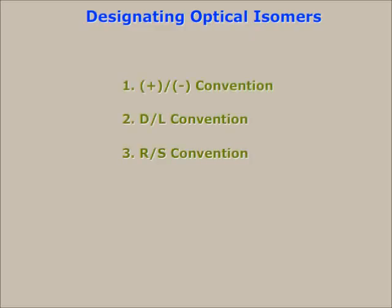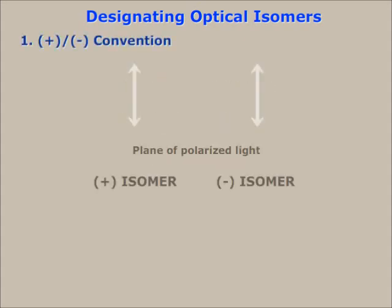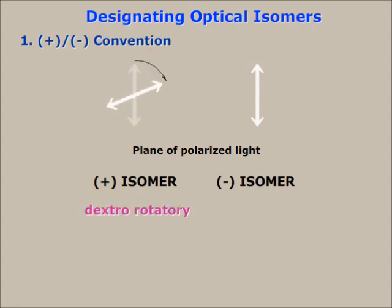Now there are three conventions for designating optical isomers. Number one: the plus/minus convention. Plus isomers rotate the plane of polarized light clockwise and are called dextrorotatory. Whereas minus isomers rotate the plane of polarized light counterclockwise and are called levorotatory.